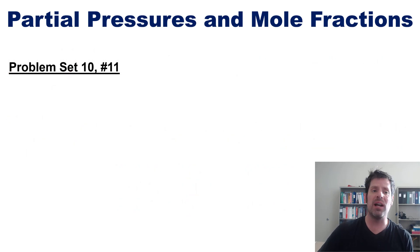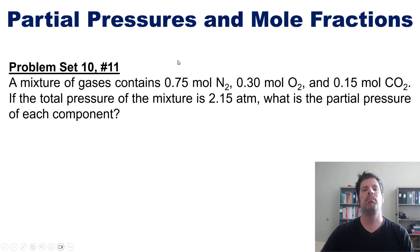We end then with a final question which I'm not going to answer here but invite you to try on your own. A mixture of gases contains 0.75 moles N2, 0.30 moles O2, and 0.15 moles of CO2. If the total pressure of the entire mix is 2.15 atmospheres, then what is the partial pressure of each component? A fun problem for you to work on your own for the sake of gaseous joy.